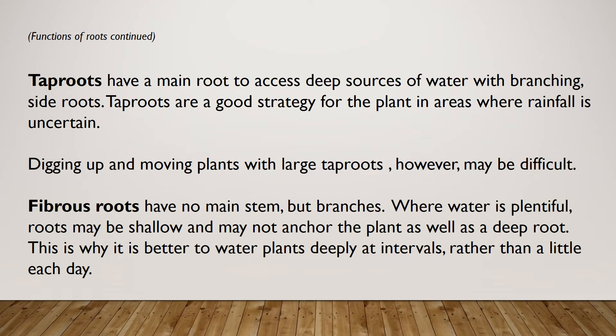Tap roots have a main root to access deep sources of water with branching side roots, and are a good strategy for plants in areas where rainfall is uncertain. However, digging up and moving a plant with a large tap root is very difficult. Fibrous roots have no main stem but branches. Where water is plentiful, roots may be shallow and may not anchor the plant as well as a deep root. This is why it is better to water plants deeply at intervals rather than a little each day.